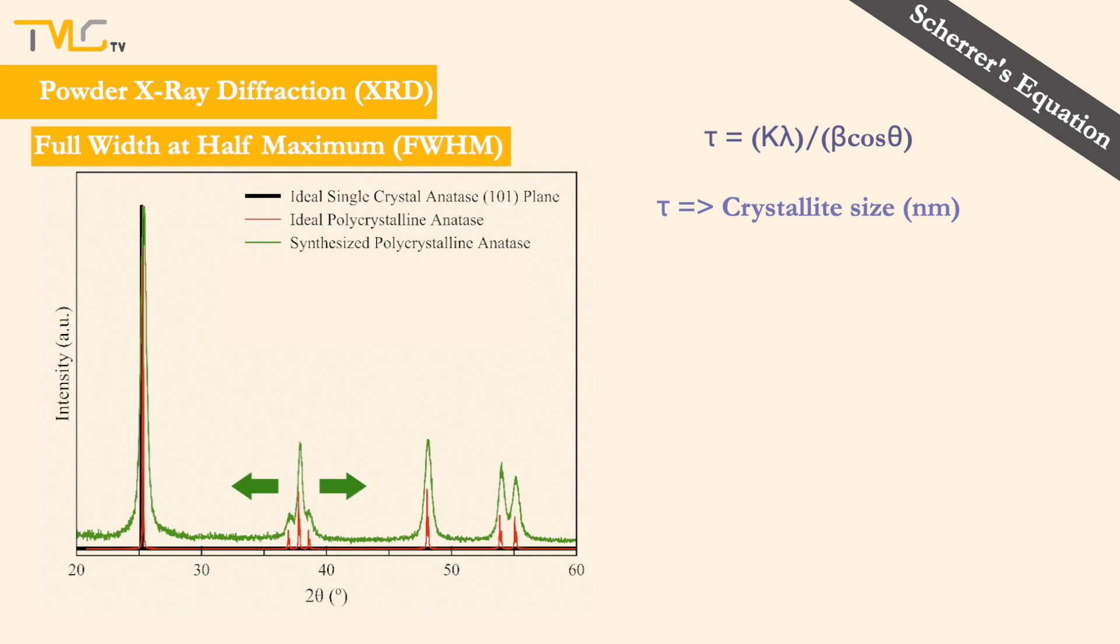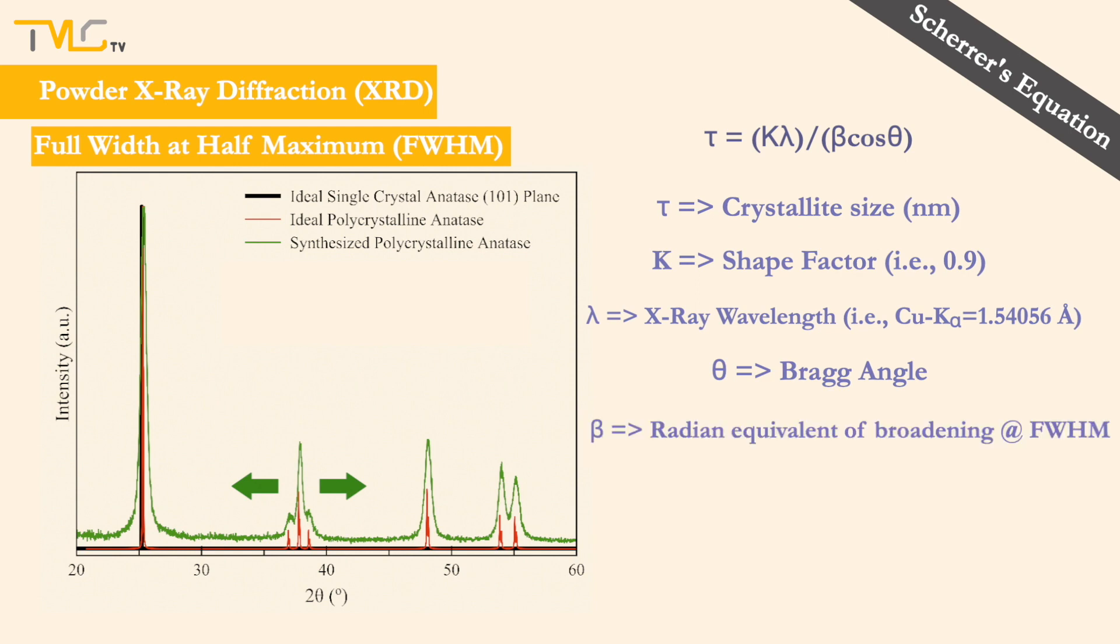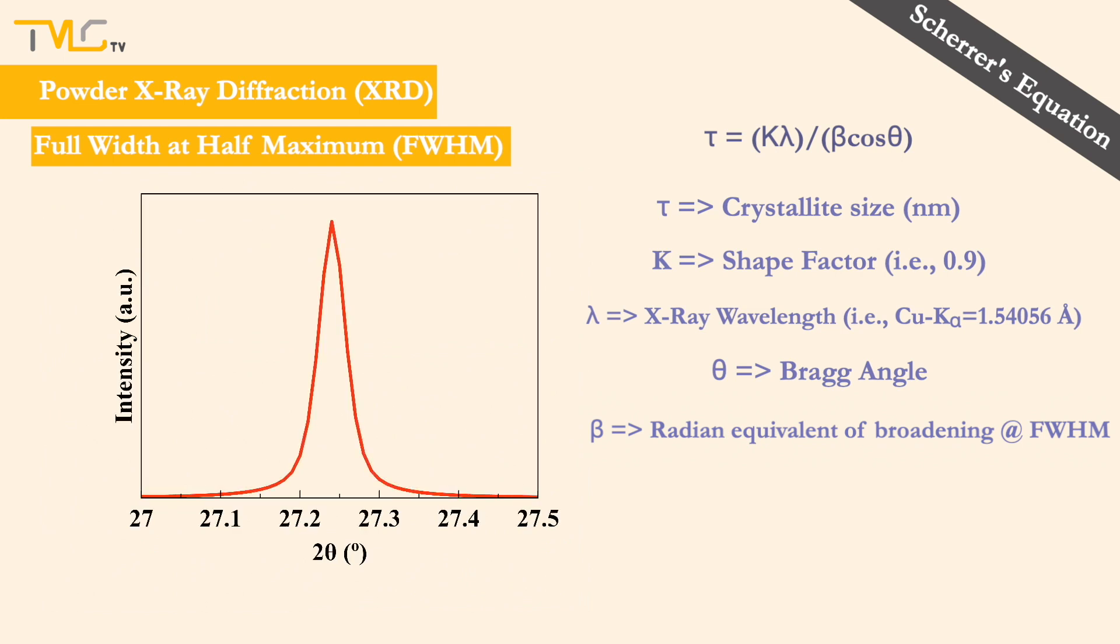Here, τ is the average crystallite size in nanometers. K is a dimensionless shape factor typically taken as 0.9. λ is the wavelength of the X-ray beam, which is equal to 1.54056 angstrom for copper K-alpha radiation. θ is the half of the 2θ degree corresponding to the top of that peak. And lastly, β is the radian equivalent of the line broadening at the half maximum of the peak after removal of instrumental broadening and background noise.